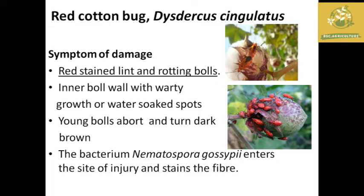The next pest is the red cotton bug, with scientific name Dysdercus cingulatus. The symptom of damage is that cotton shows red-stained lint and rotting bolls. The inner boll shows water-soaked spots and young bolls abort and turn dark brown in color. This is mainly due to the entry of secondary infections by bacteria.